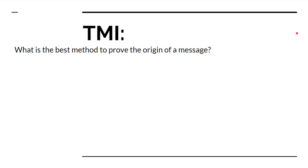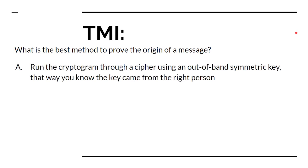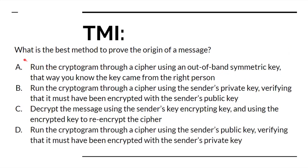Here's an example of a too-much-information question. The question is: what is the best method to prove the origin of a message? The TMI is in the response options. Option A says: run the cryptogram — which just means the cipher text — through a cipher using an out-of-band symmetric key, so that you know the key came from the right person. Do symmetric keys provide proof of origin? No, they do not. So option A is out.